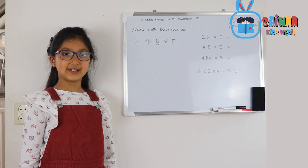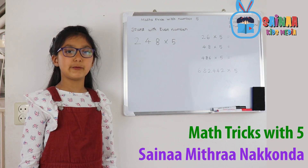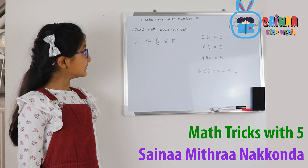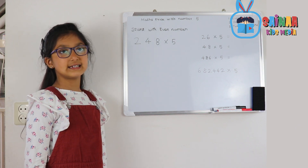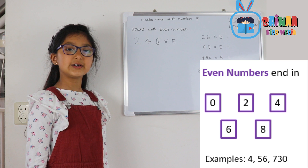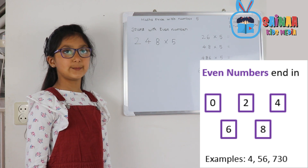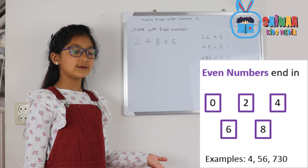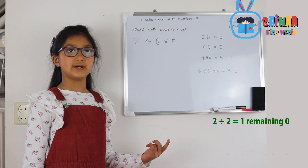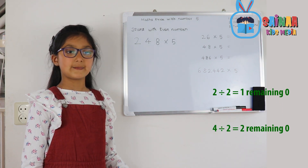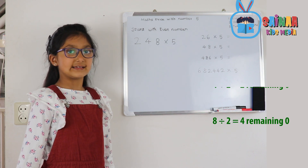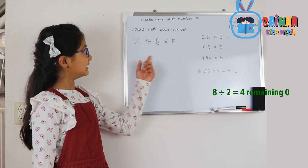Hello friends, today I'm going to teach you simple math tricks with number 5. Let's start with the even number math trick. An even number is a number that you can divide by 2, like 2 divided by 2 is 1, 4 divided by 2 is 2, 8 divided by 2 is 4. Let's begin.